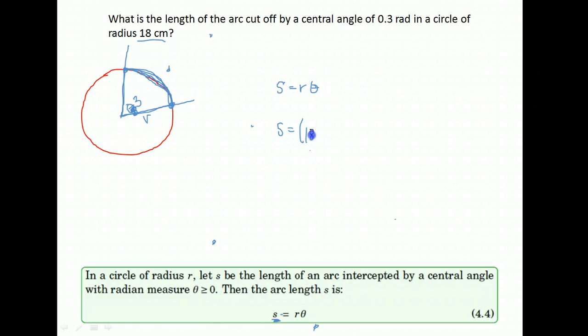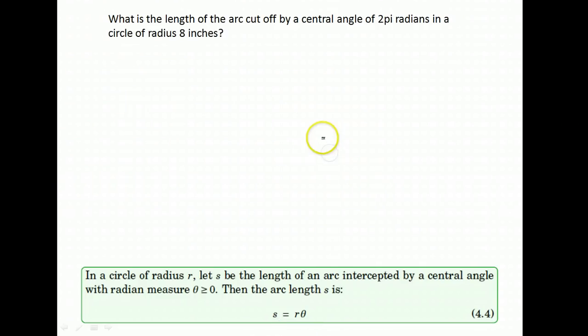So we take the radius of 18 centimeters times the radian measure of our angle which they gave us in radians was 0.3, and we just multiply those. So we take 18 times 0.3, or 3 tenths, and we get 5.4, and that would be in centimeters, it's a distance along the edge of the circle. So just make sure you read these, they're really not too bad, but you want to make sure you read in case there's anything tricky in them.